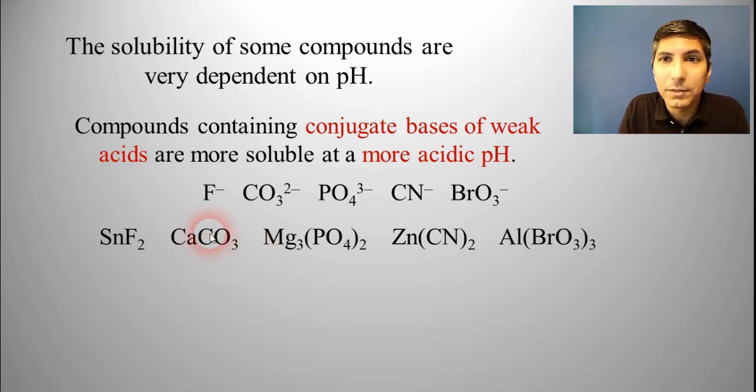This explains why if you have a statue that's made of limestone, calcium carbonate, and it comes in contact with acid rain, has a more acidic pH, that acid rain, given enough time, is going to slowly dissolve that calcium carbonate limestone statue because of the pH dependency of that solubility.